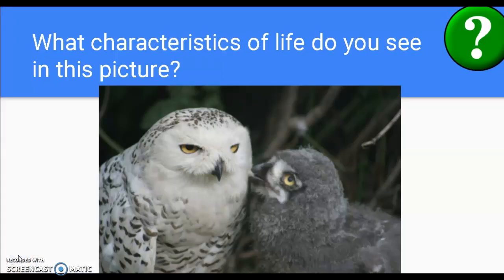I'm going to go through the different characteristics of life shown in this photo as an example of what I want you to do. You might not know what all the animals and plants are that you're looking at, or you might not totally know what's going on in the picture — that's okay. What I want you to do is explain how that photo meets the characteristic of life, and you can make up stories about what's going on in the picture in order to do that.